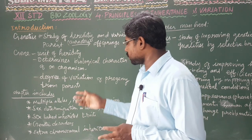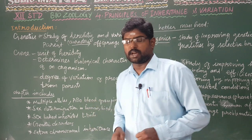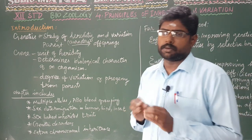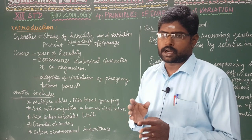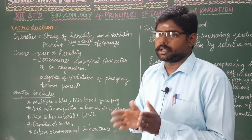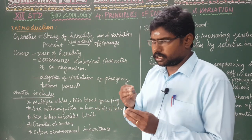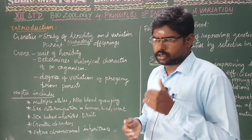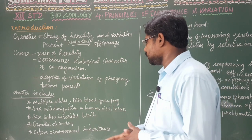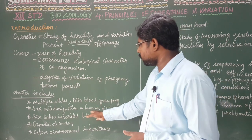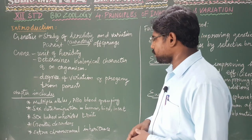In this chapter, we will learn about multiple alleles, ABO blood groupings, chromosomes, ABO blood groups, and sex determination — sex determination in human beings, insects, and birds.